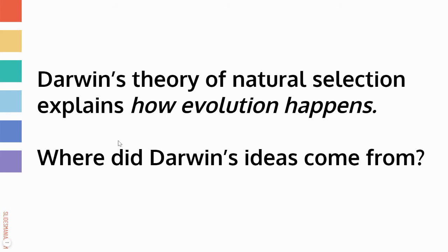Darwin's theory of natural selection explains how evolution can happen — how do we get changes in species over time? Before we explain exactly what natural selection is, we're first going to take a look at where Darwin's ideas came from. He didn't come up with this idea in a vacuum, and he actually wasn't the only one who came up with it. There was another person named Alfred Wallace who came up with the idea concurrently. We'll focus more on Darwin, but we'll think about what other ideas were in play at this time and how they informed natural selection.